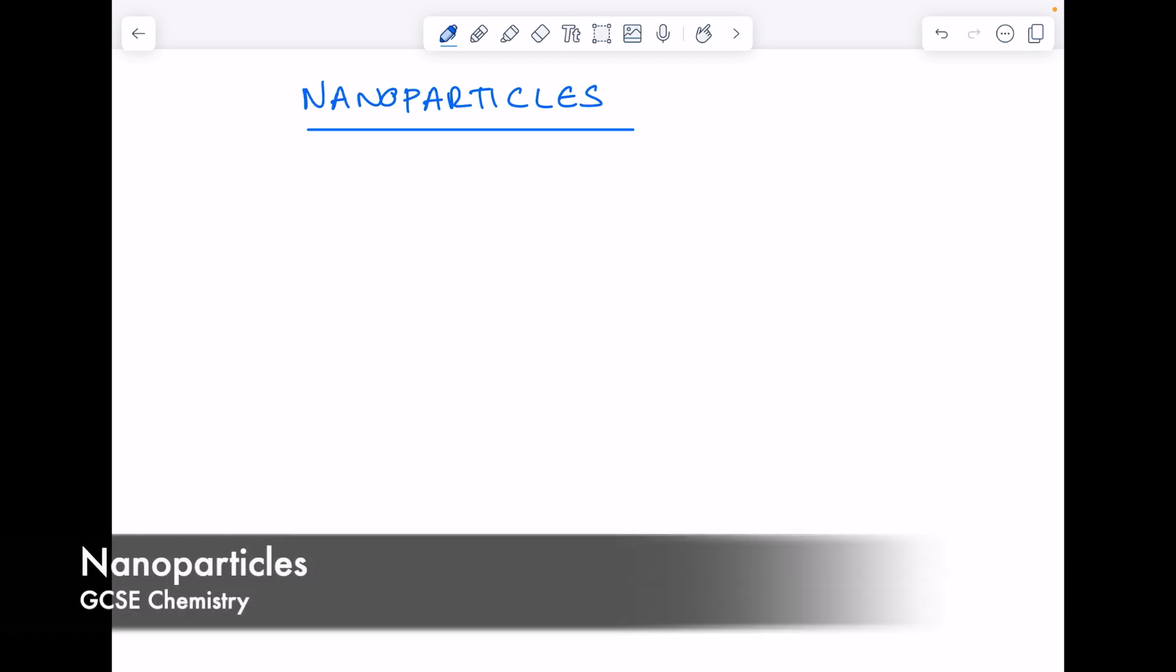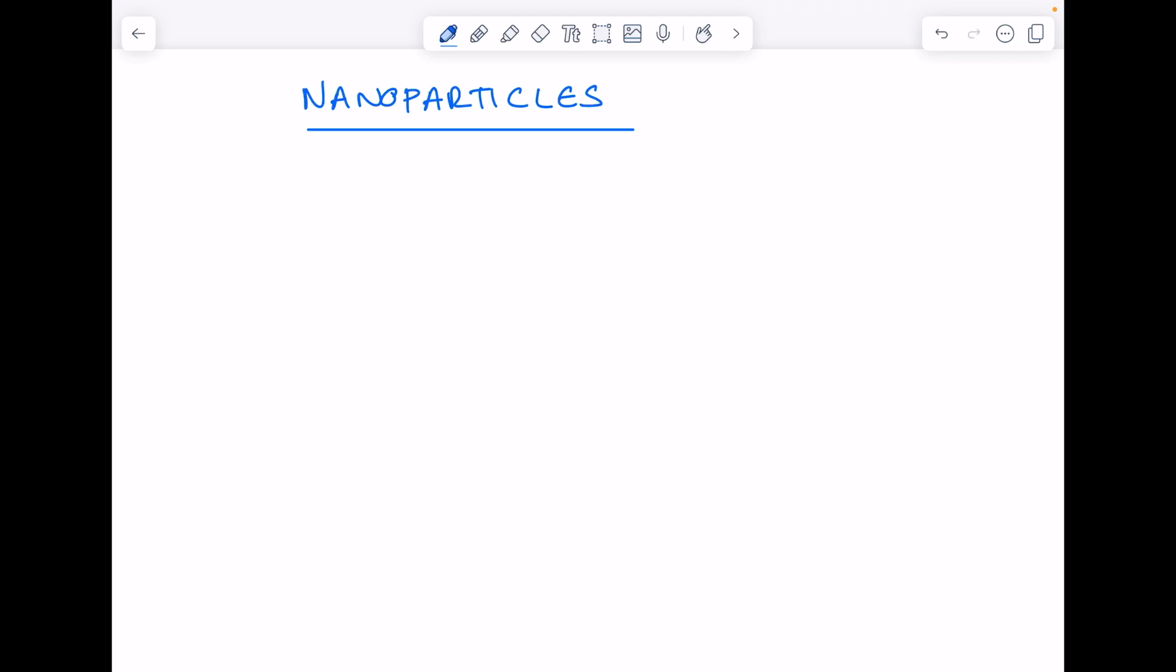Today's GCSE chemistry video is all to do with nanoparticles. So as the name suggests, they are extremely small. They are between 1 to 100 nanometers in size, and if we're saying that a nanoparticle is one nanometer in size, that means it's the equivalent of 1 times 10 to the minus 9 meters. They're made up of just a few hundred atoms.